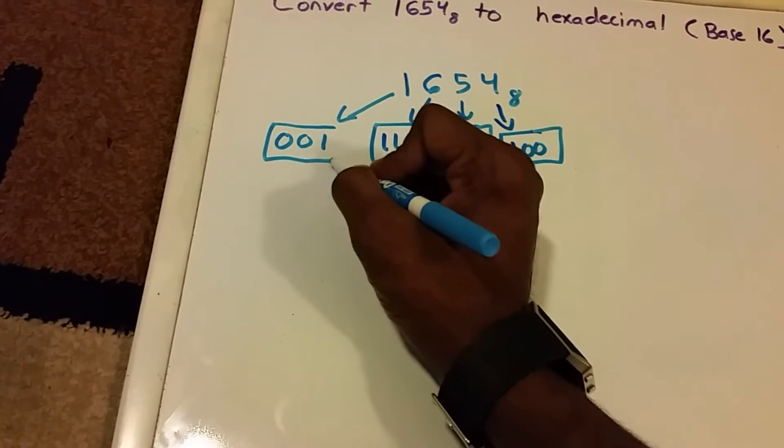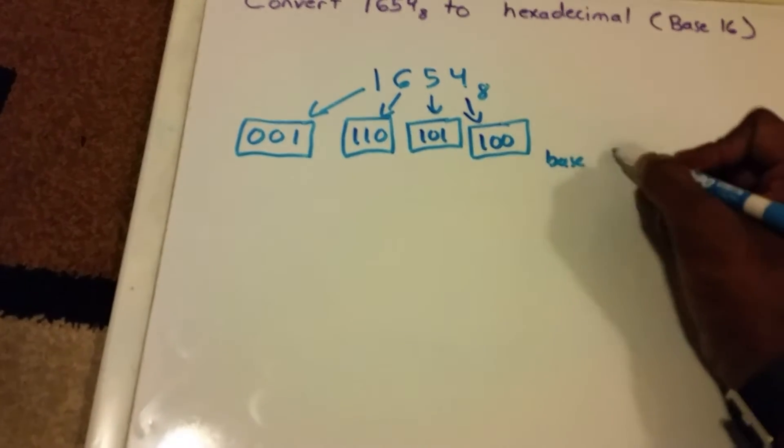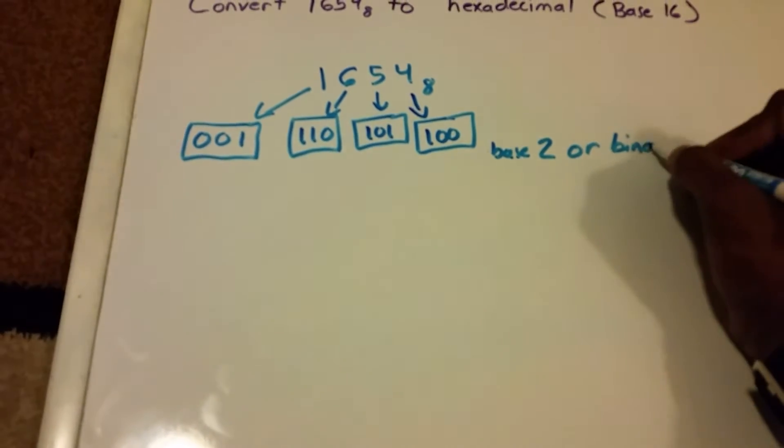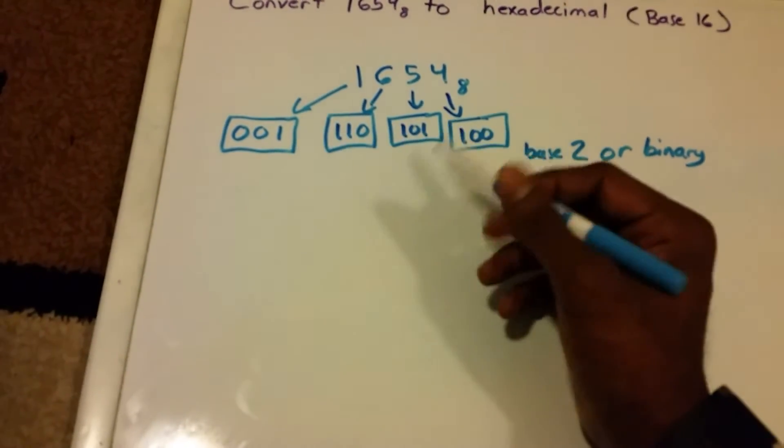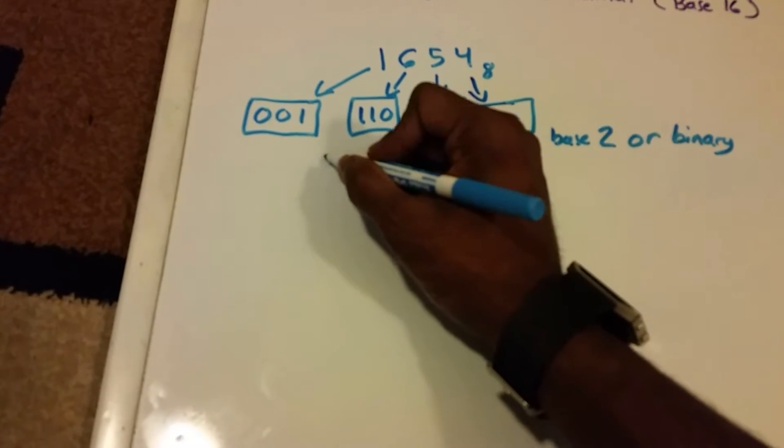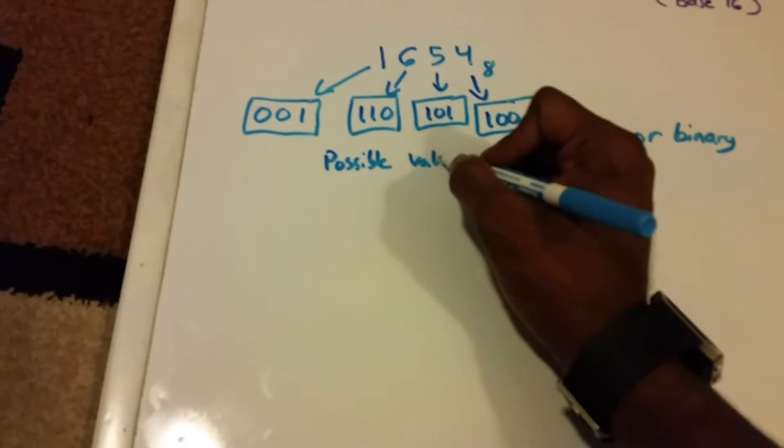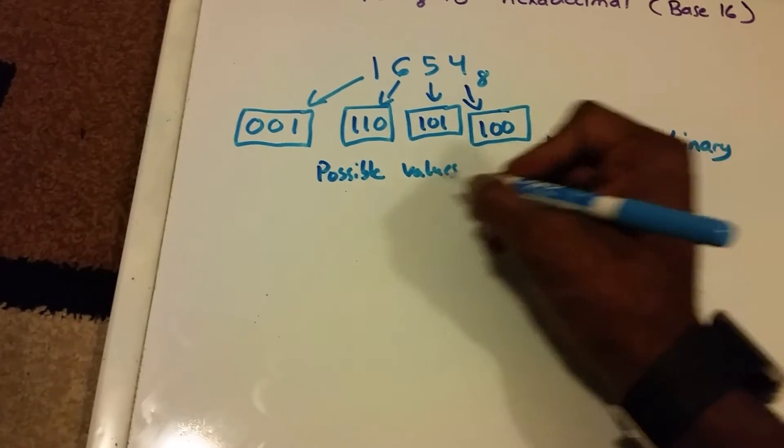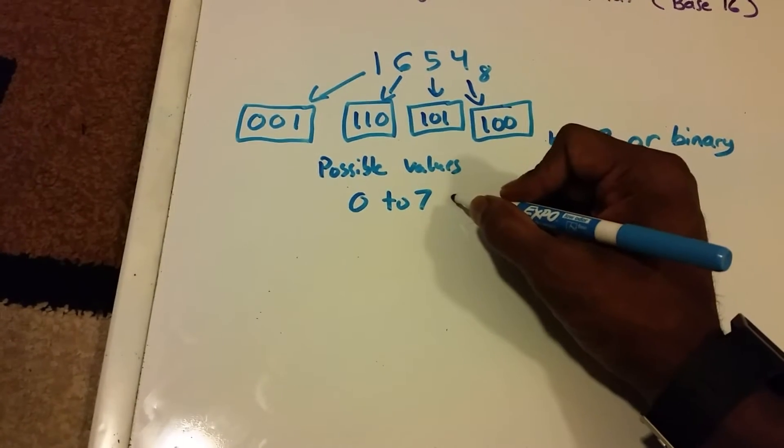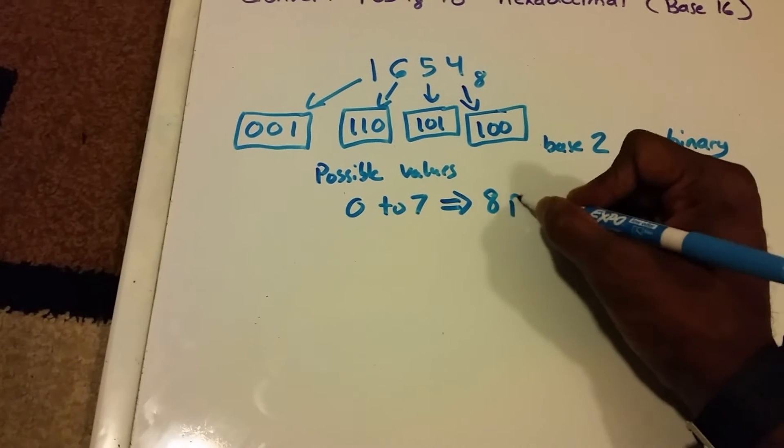And again, this is base 2 or binary. The reason why we're doing these groupings is because the number of possible values is 0 to 7, which is 8 possible values.